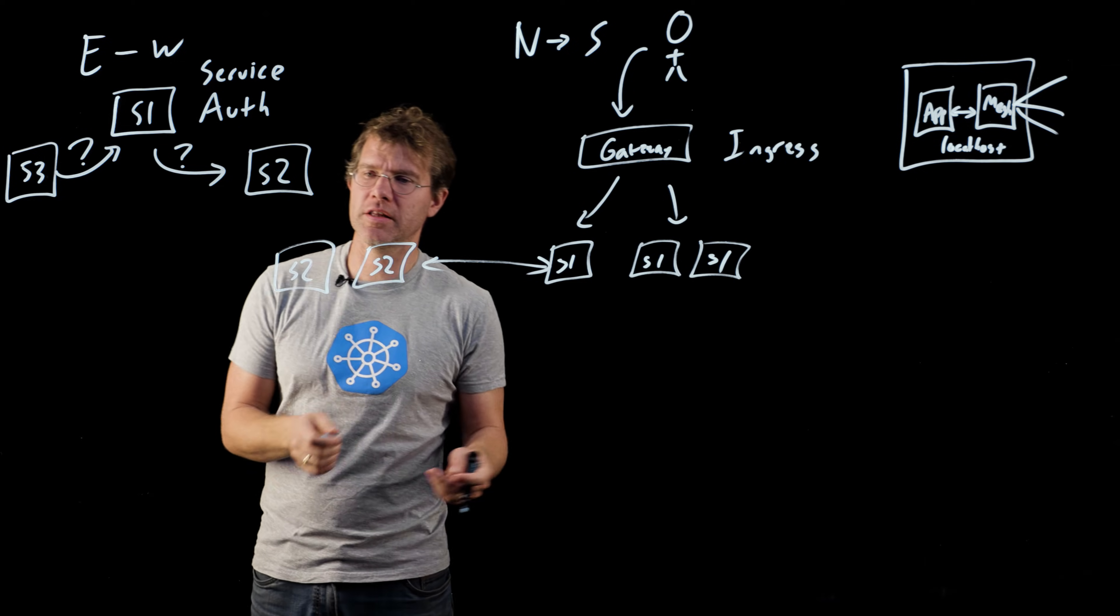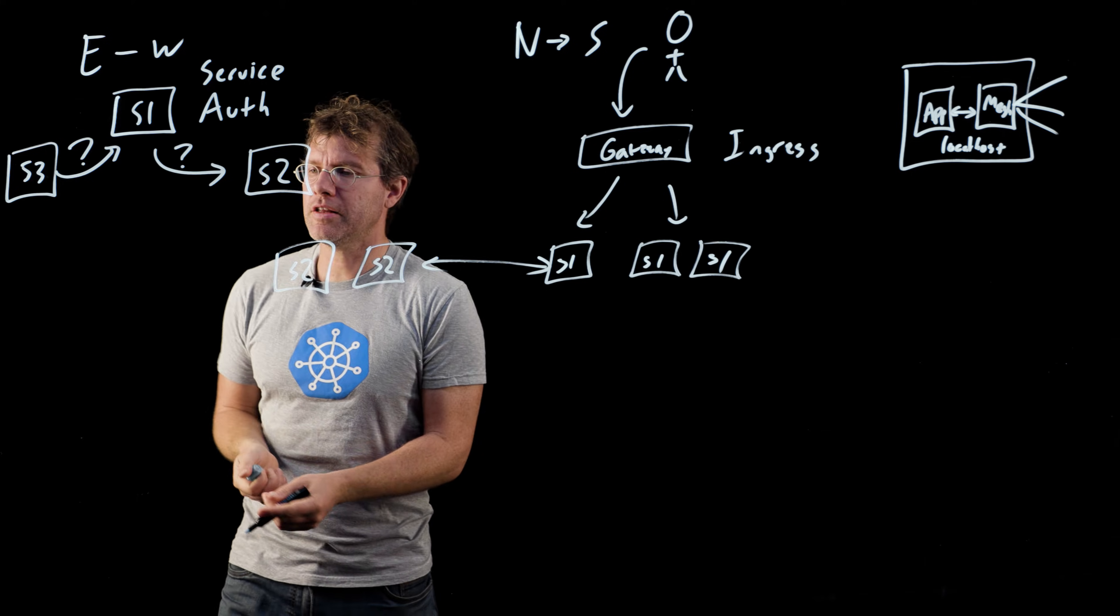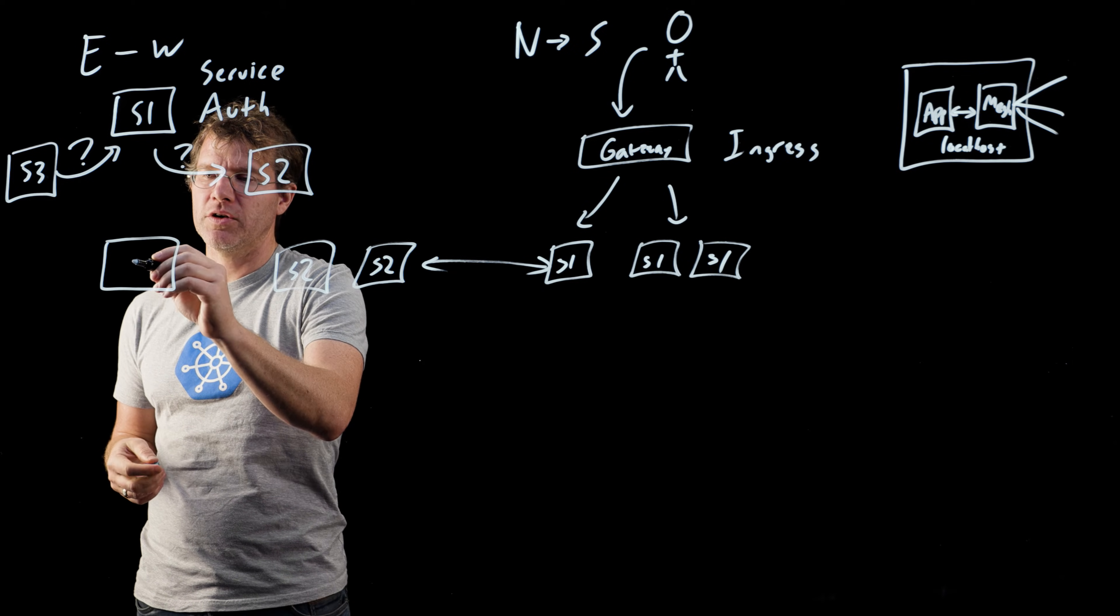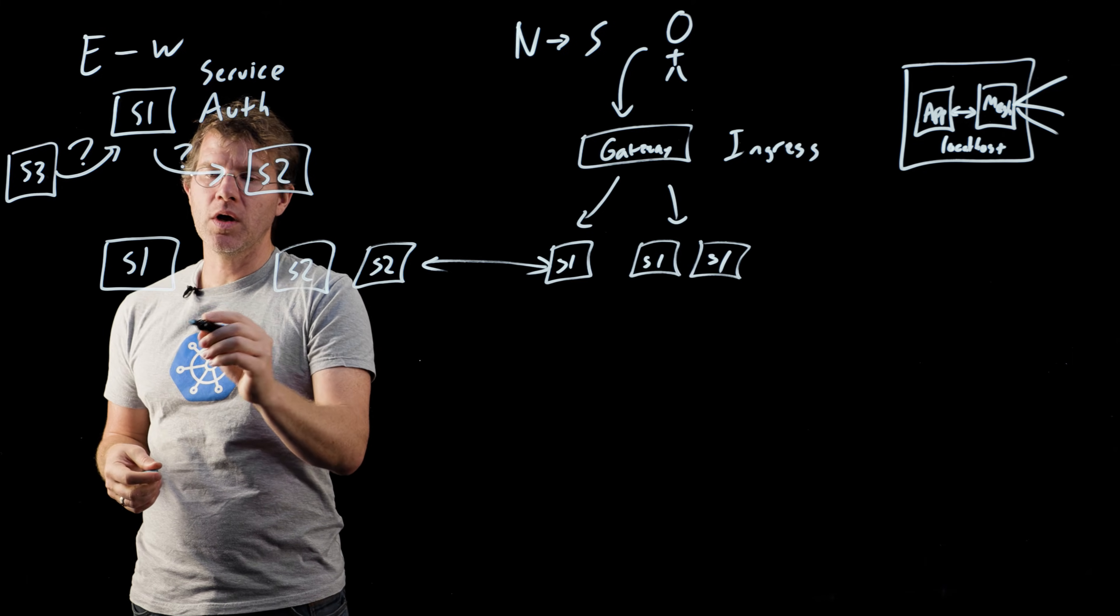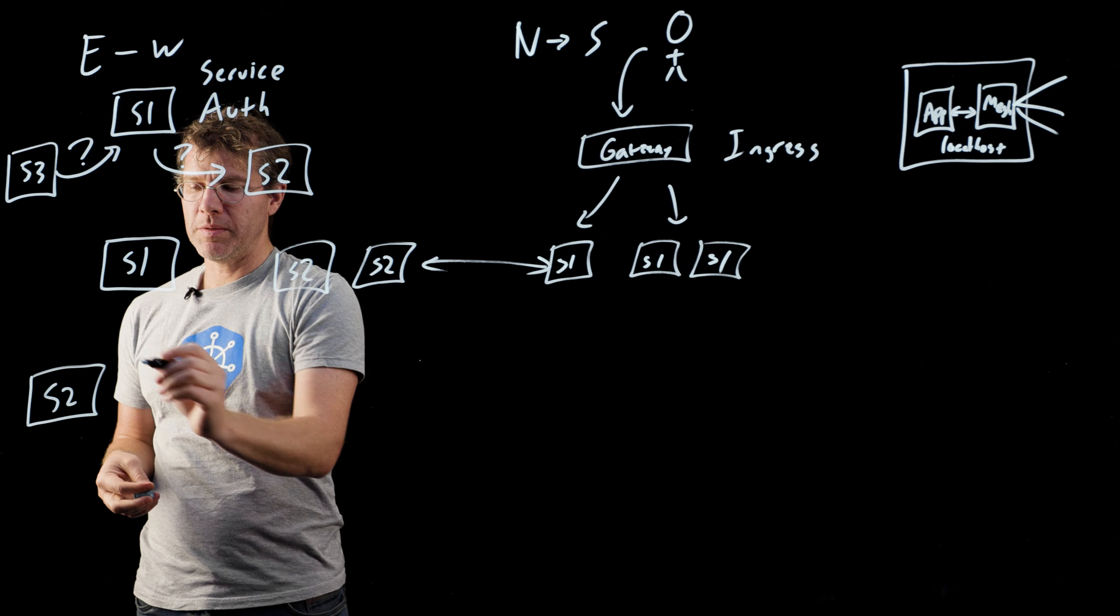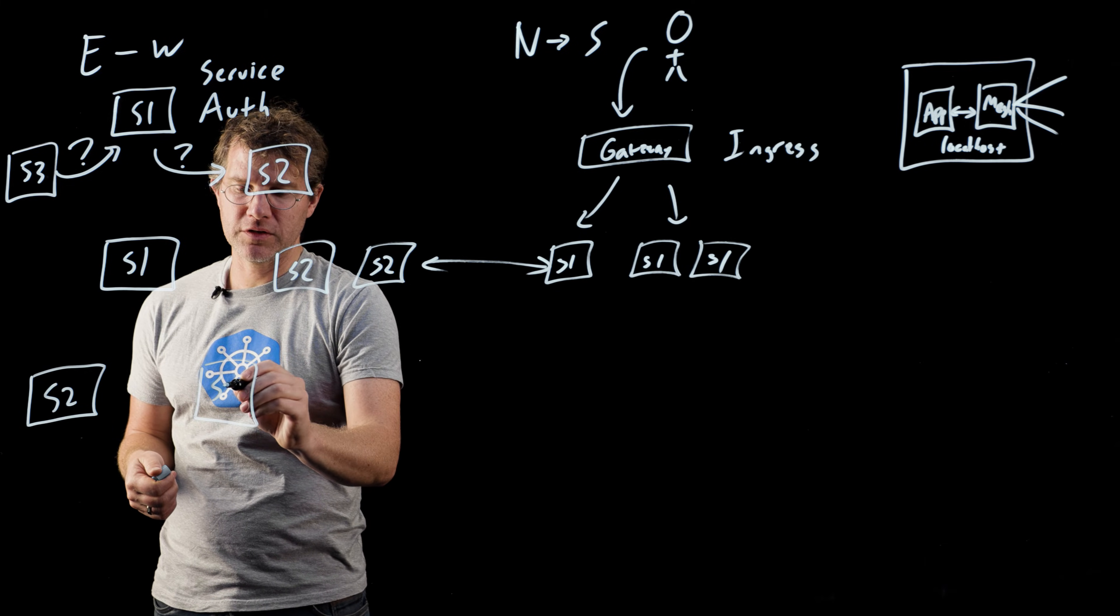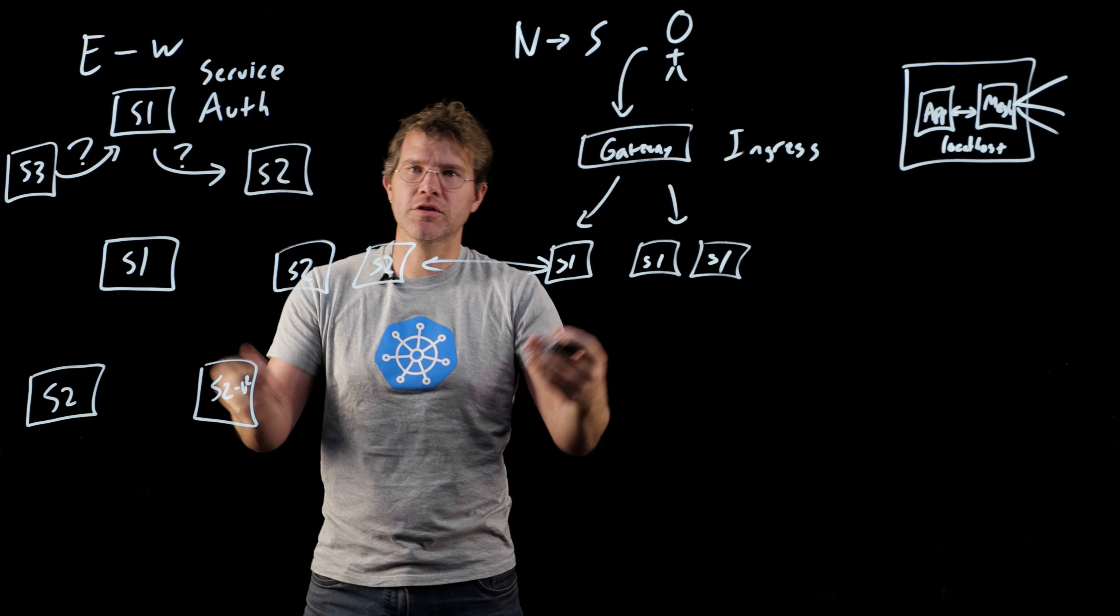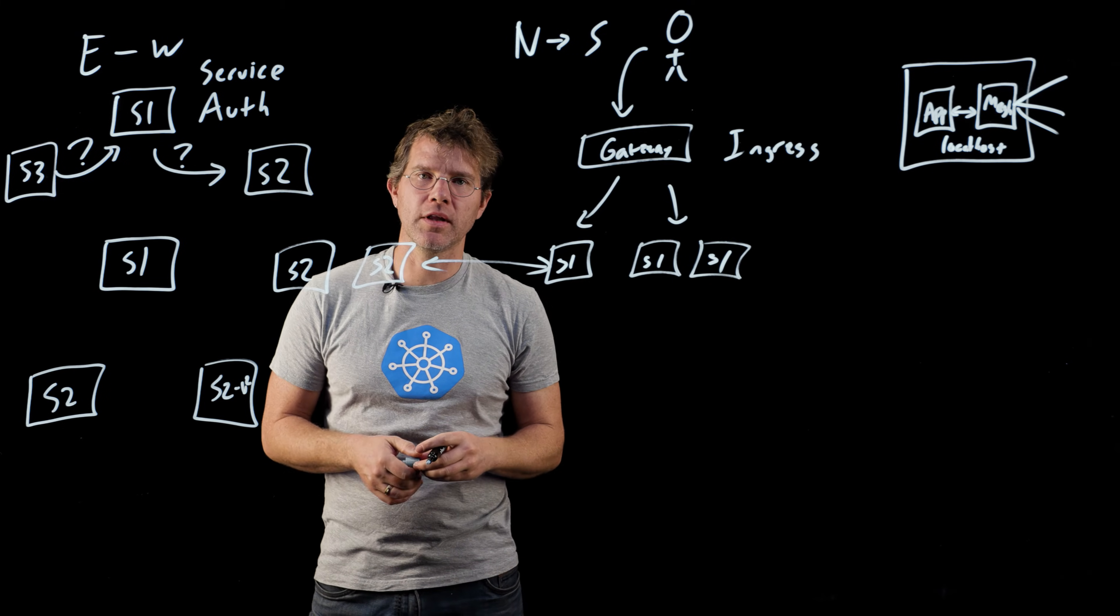If auth is the first thing that a service mesh provides, the second thing is the idea of experiments or canary. If I'm service one and I'm going to talk to service two, there may be two different versions of service two. There may be service two, and there may be service two v2, which is the next version of the service that I'm going to roll out.